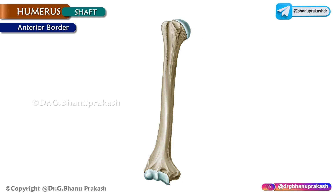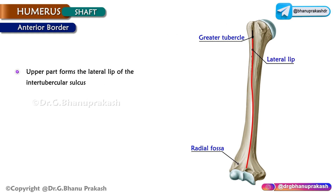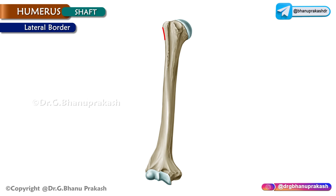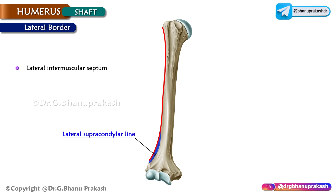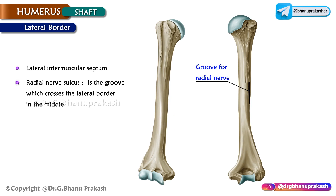The anterior border extends from the lower end of the greater tubercle to just above the radial fossa. Its upper part forms the lateral lip of the intertubercular sulcus. The lateral border extends from the greater tubercle to the lateral epicondyle. Its lower part is called the lateral supracondylar line, which gives attachment to the lateral intermuscular septum. The radial nerve sulcus is the groove that crosses the lateral border in the middle.